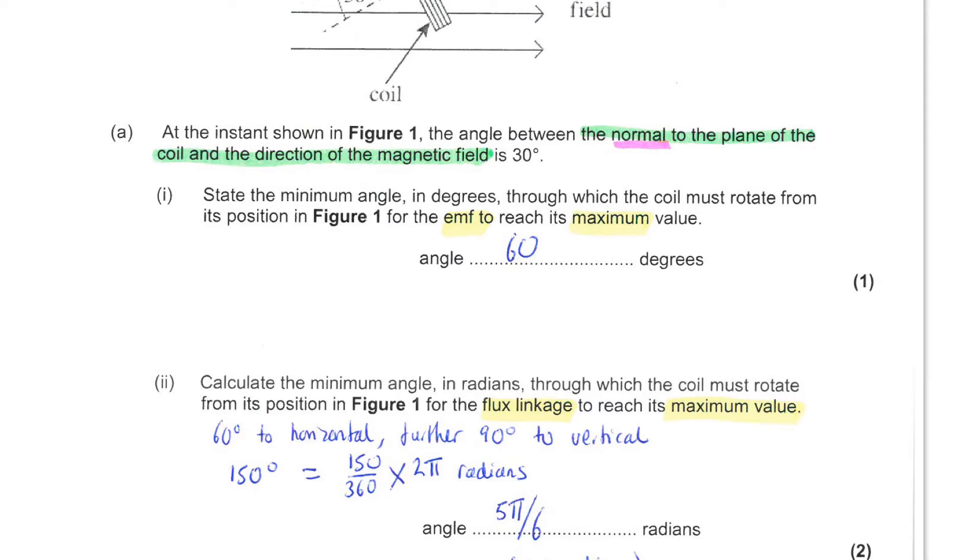That gives us a total of 150 degrees of rotation. Now you are asked for an answer in radians, so you need to convert that. 150 divided by 360 gives us the fraction of the circle, and we multiply this by 2π to give a value of 5π divided by 6 radians. You could convert that to 2.6 radians. Notice it is quite unusual in physics papers for you to be allowed to leave an answer in fractions, and radians with a value of π as part of the answer is really an exception to the general rule.